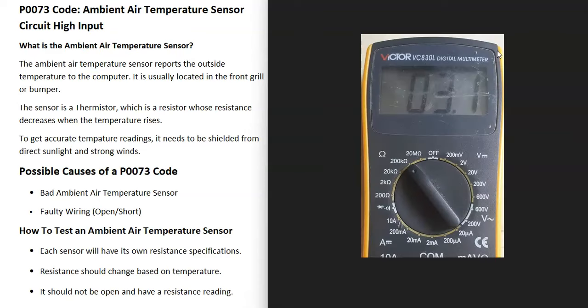To test that sensor, you use a multimeter and test it for resistance. Each sensor has its own resistance specifications, which you can look up and match to see if it's correct. If you can't get the resistance specifications, test it for resistance and it shouldn't be open. It should be reading something. If it's open, then you know it's bad.